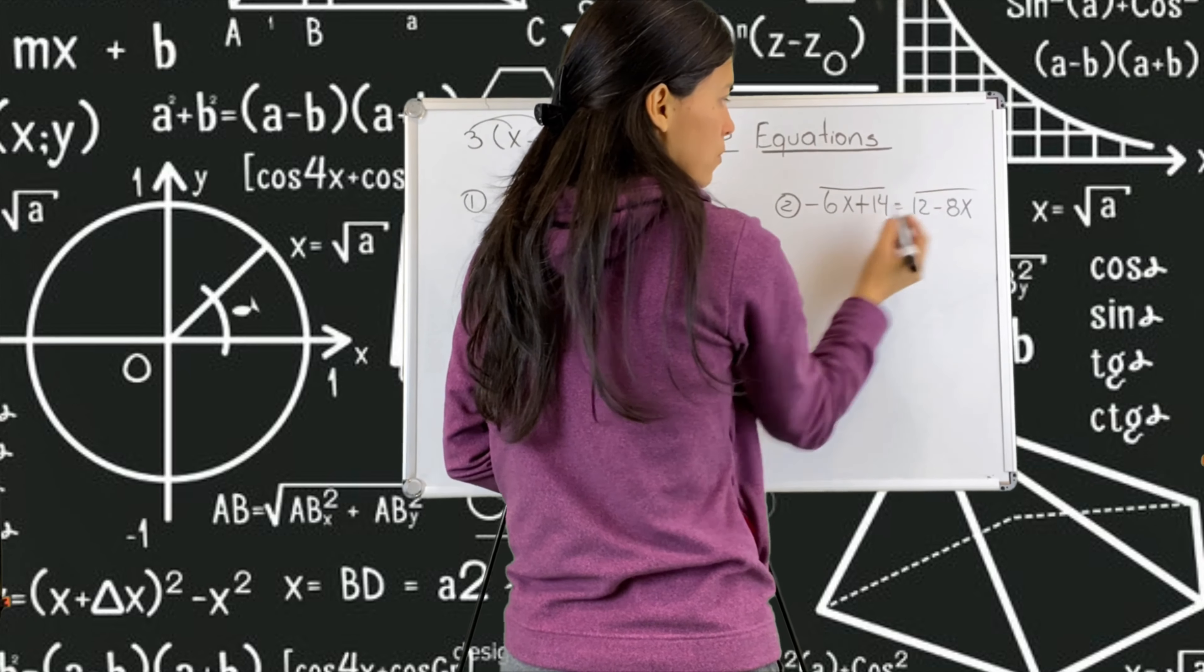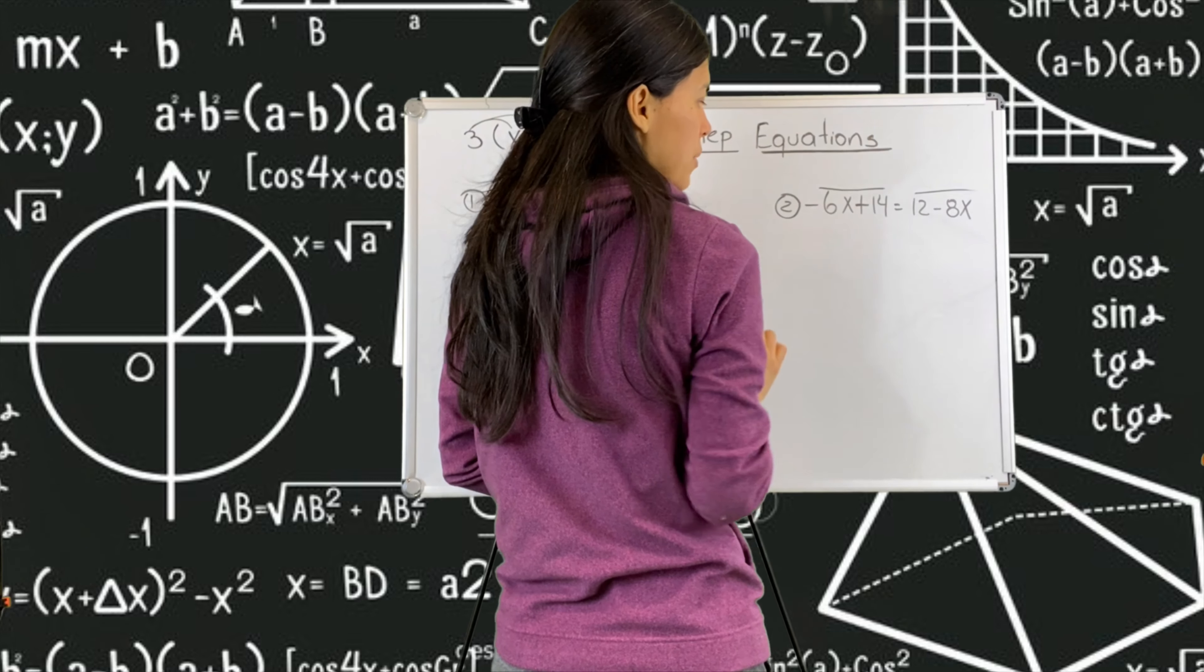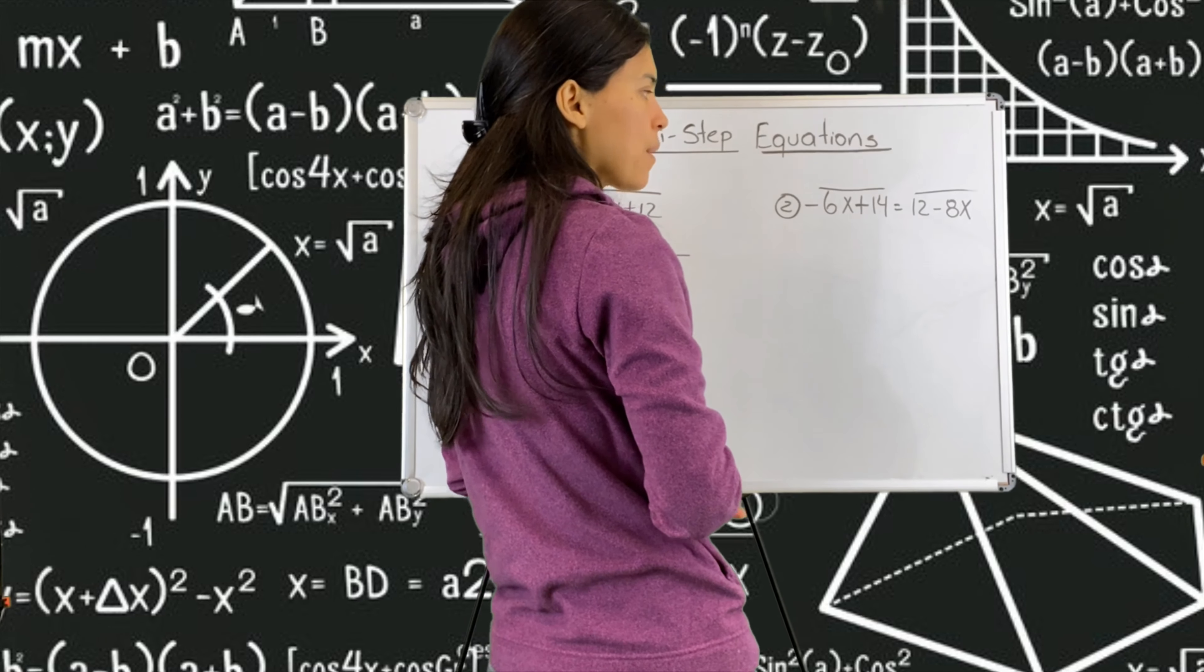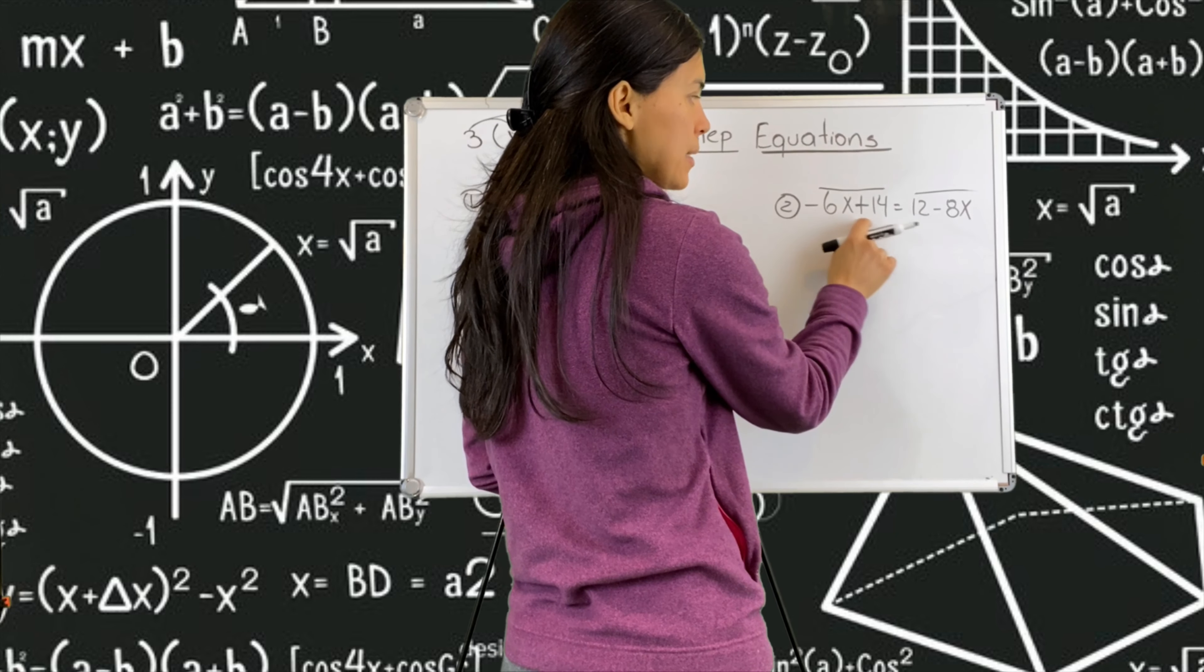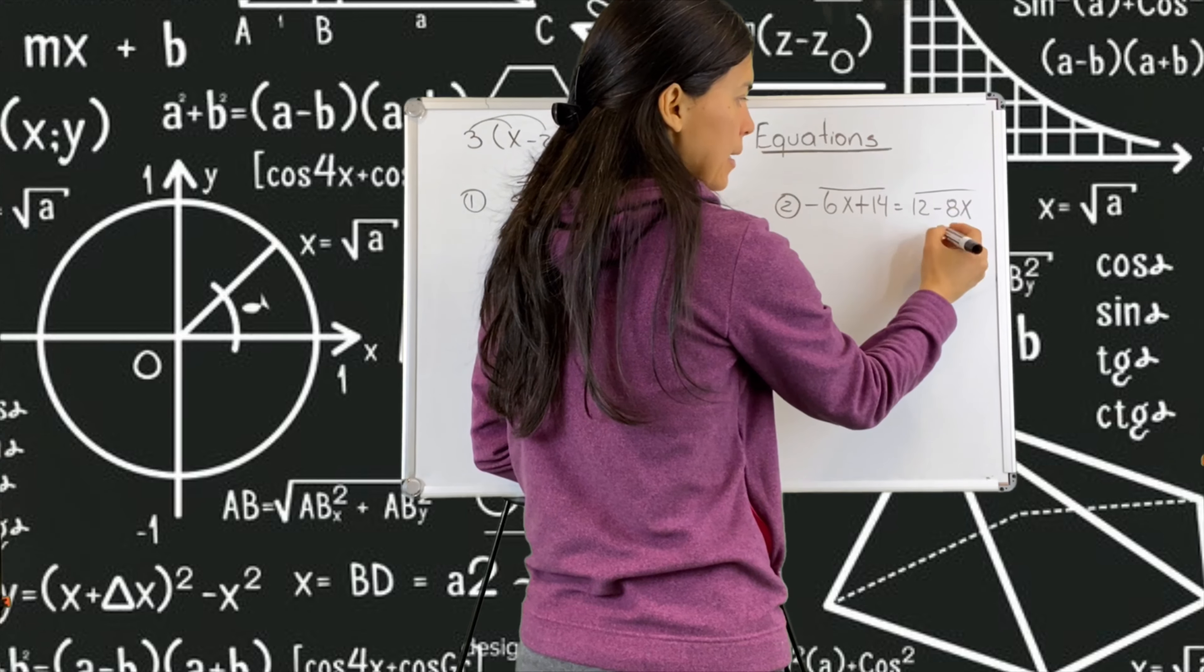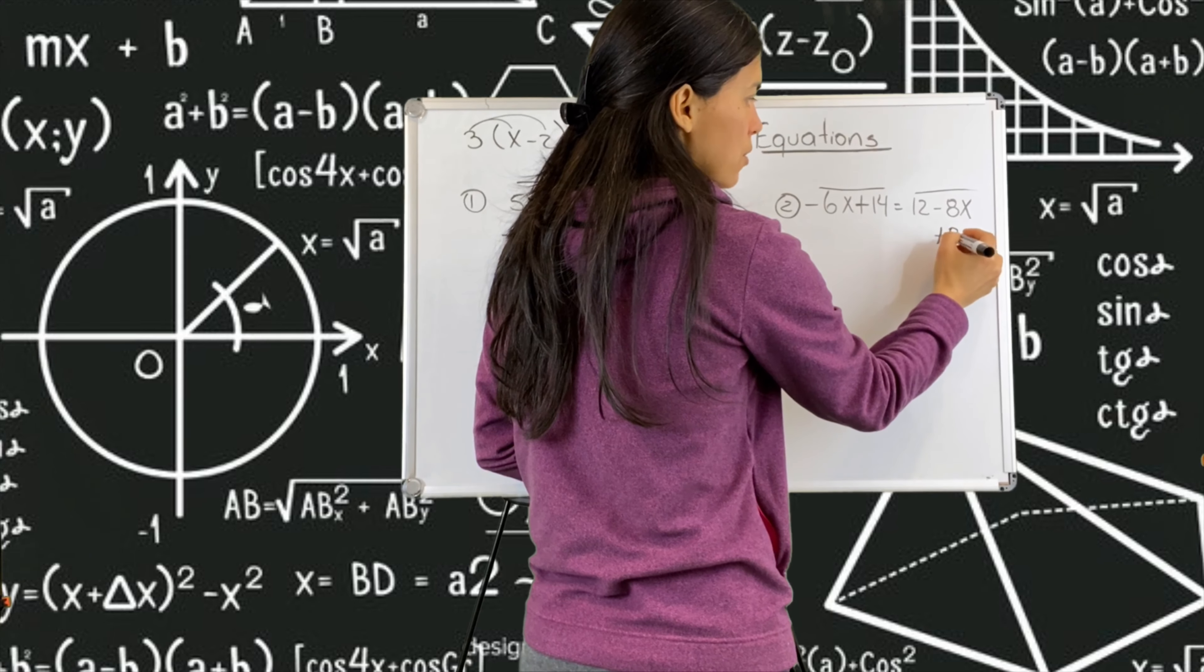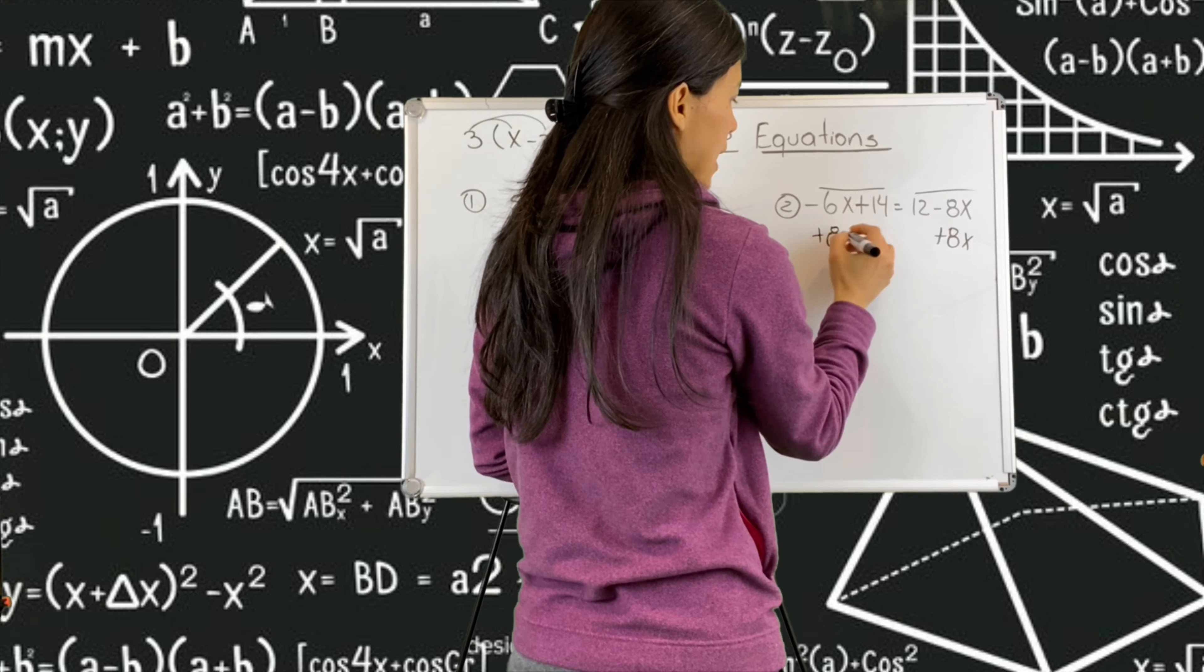No numbers, no variables, no more x's here or numbers, no more x's here or numbers. So step number three, move variables. I will leave the minus six x and I will get rid of this x. To undo minus eight x, I'm going to put a plus eight x on both sides.